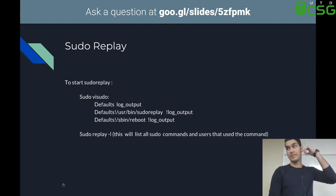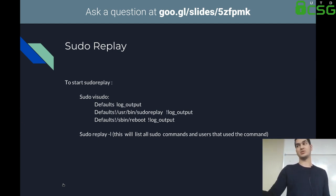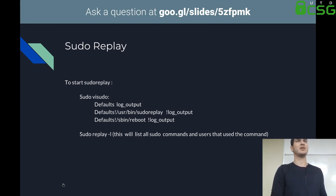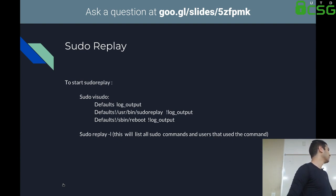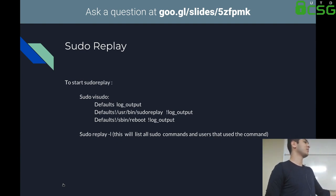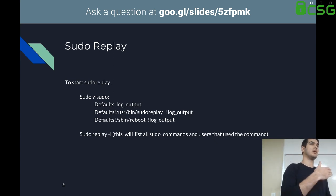Sudo replay is another useful tool. It allows you to check what someone has done in sudo. To enable it you type 'visudo', which opens vi and edits your sudo config, and add these lines at the bottom — I believe they're commented out by default and you just uncomment them. It sets the default log output and where it'll output to. You can use 'sudo replay -l' to list your sudo commands, and you can even replay them in real time to see how long they took and what the time intervals were between commands.